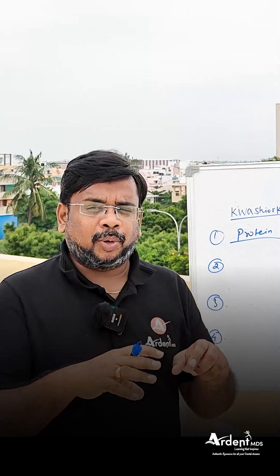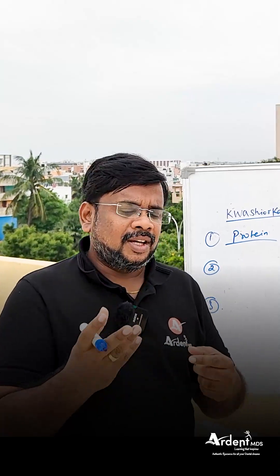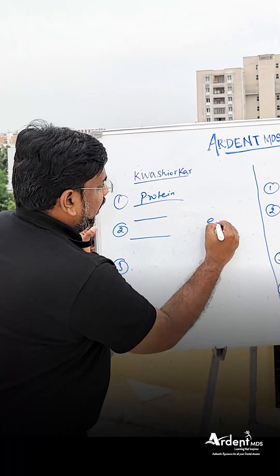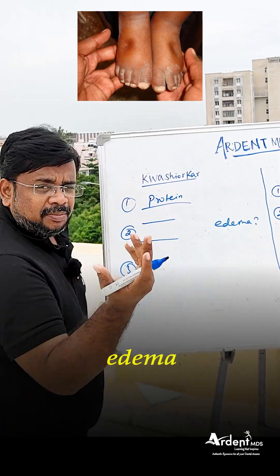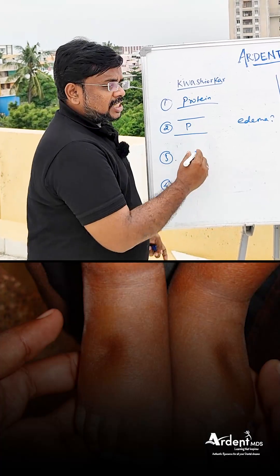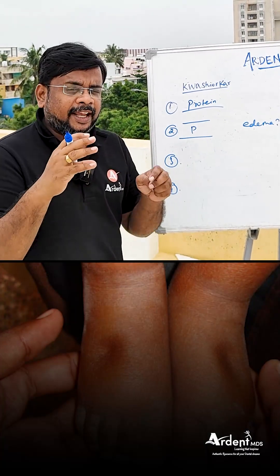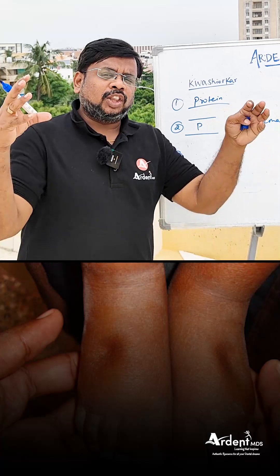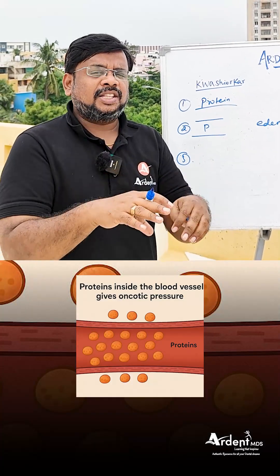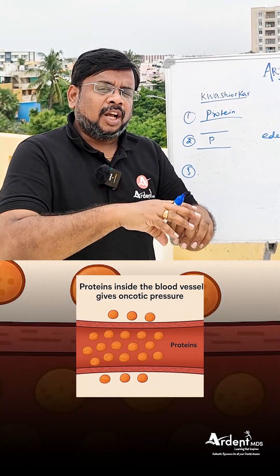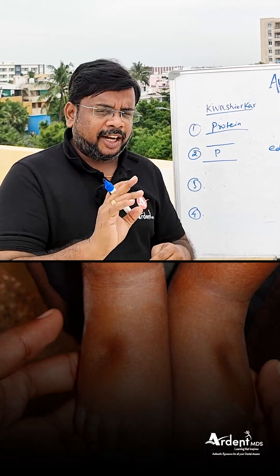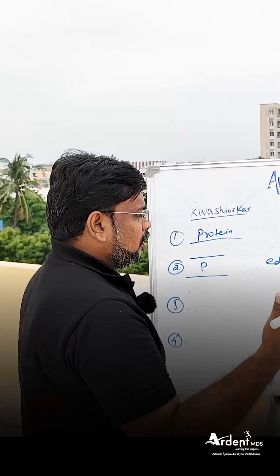Since the patient with Kwashiorkor has lost protein, the patient will develop edema. What is the reason behind this? Because the protein present inside the blood vessel creates oncotic pressure, which holds the fluid inside the blood vessel. With no protein, the fluid comes out into the tissue space, creating edema. In Marasmus, however, edema formation is not necessary.